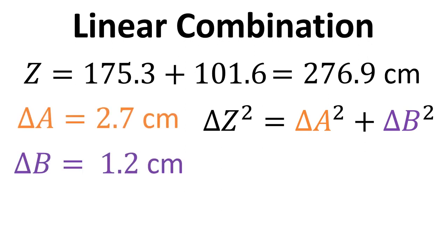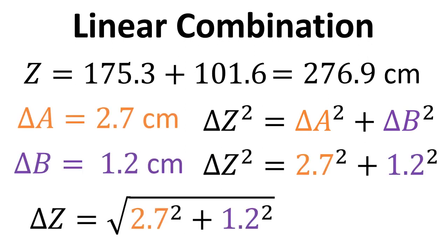That's the equation we need to use. If we put all of this information in, we will get a value. So 2.7 squared plus 1.2 squared, and take the square root of both sides, equals 3.0 centimeters.